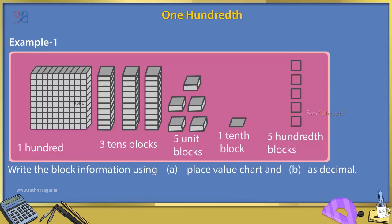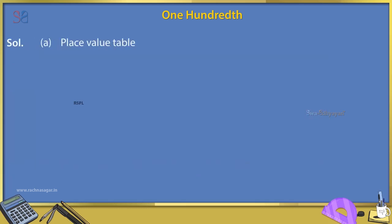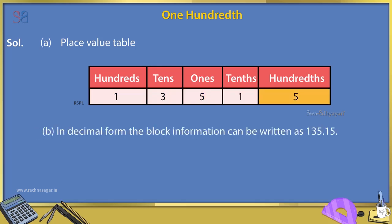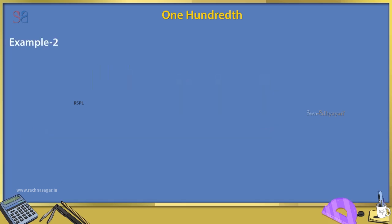Example 1: Write the block information using A. place value chart and B. as decimal. Solution: A. Place value table — 100s: 1, 10s: 3, 1s: 5, 10ths: 1, 100ths: 5. B. In decimal form, the block information can be written as 135.15.